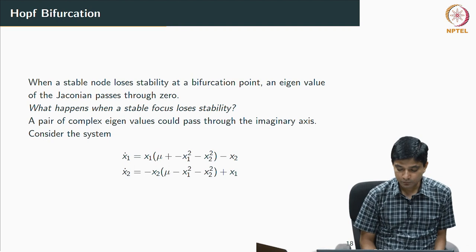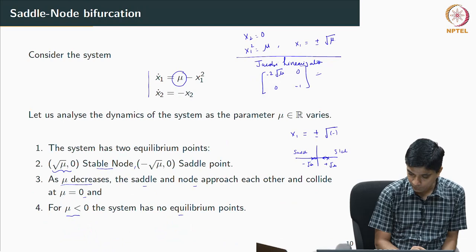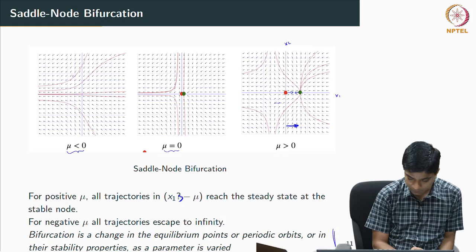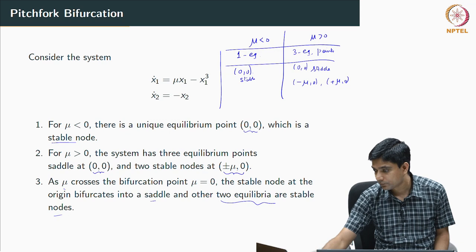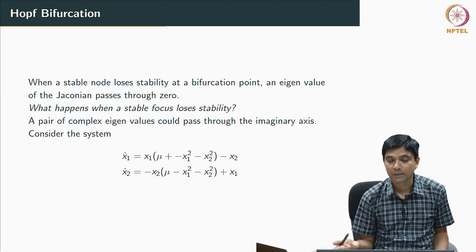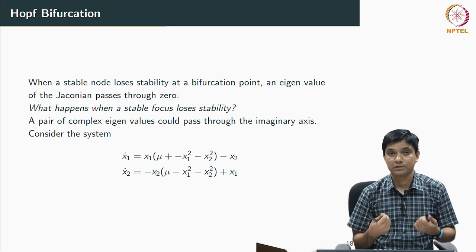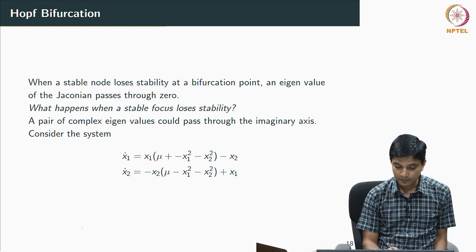To summarize what is happening in all these examples: when mu = 0, you are encountering a zero eigenvalue of the linearization. Whenever a stable node loses its stability at a bifurcation point, an eigenvalue of the Jacobian passes through zero. So far we were looking at stable nodes, but stable equilibria can also be stable foci. The last example for today is what happens when a stable focus loses stability.